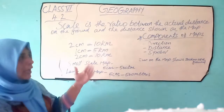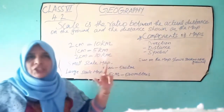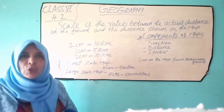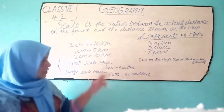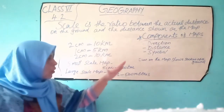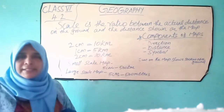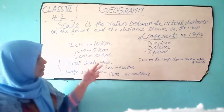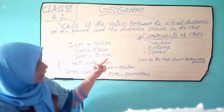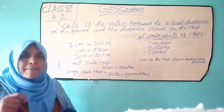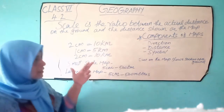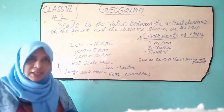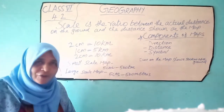Just a recap on the previous class. Directions — the cardinal directions are north, west, east, and south. There are also sub-directions. A compass is used to find out the direction. The compass magnetic needle points towards the north-south direction. That's all for today. Thank you.